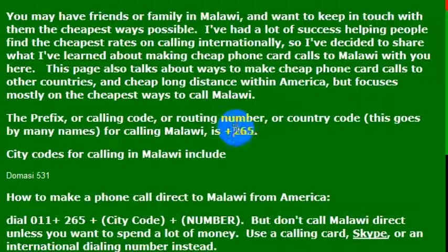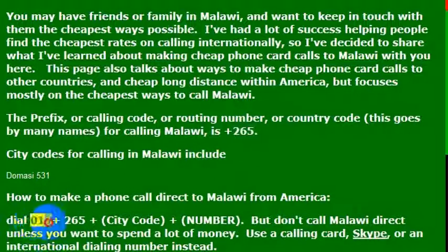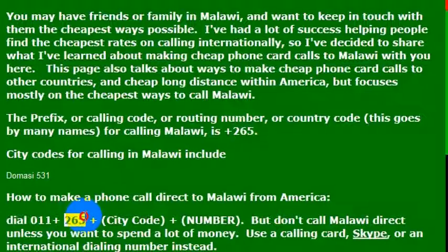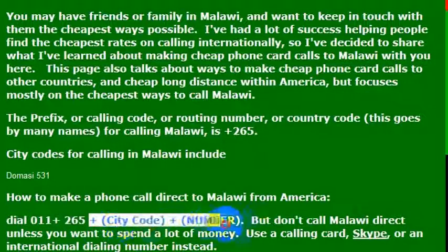So I needed to know the country code of 265. And then to get an international dialing code to call Malawi, I needed to use the international outbound calling number from the United States. So calling from a landline, dial 011, then the country code for Malawi, which is 265. So 011-265, and then the phone number that I wanted to call.